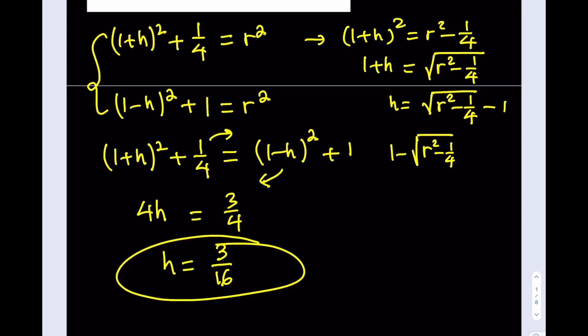And if I plug that into the second equation, which gives me one minus this expression here, the radical, right? Of course, this is one minus h, so it's going to be one minus that plus one, right? And then that will be squared, and then you'll add the one, and that'll equal r². So that's going to complicate things.